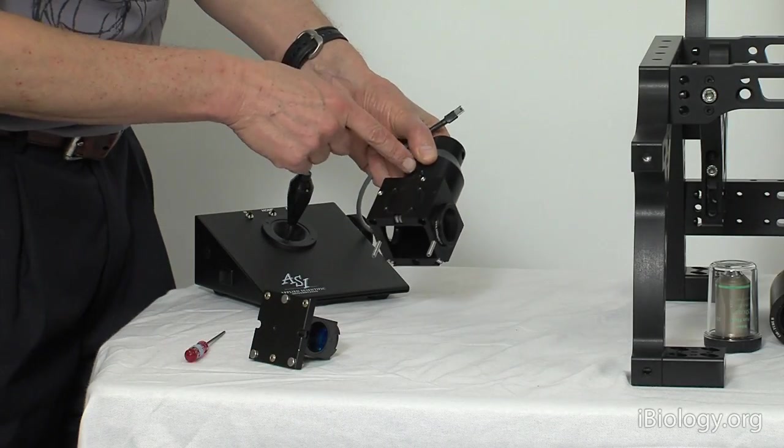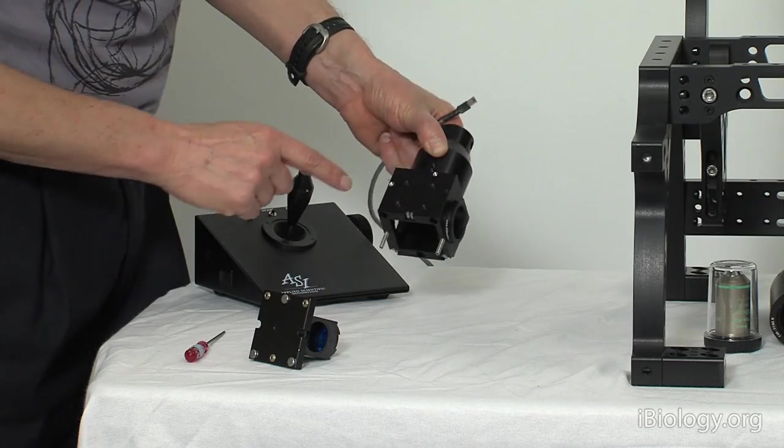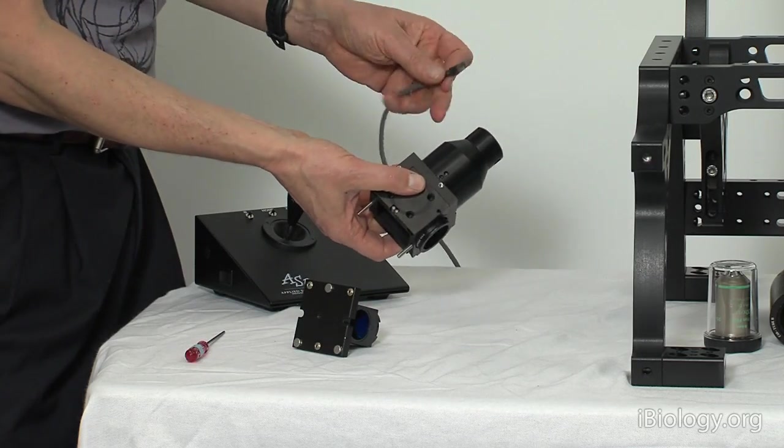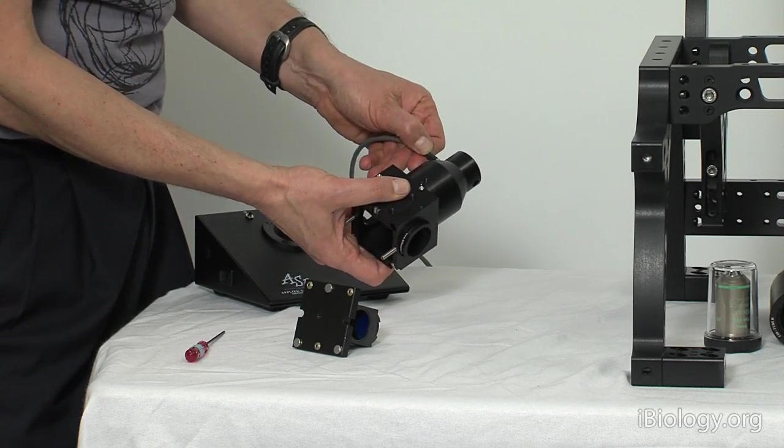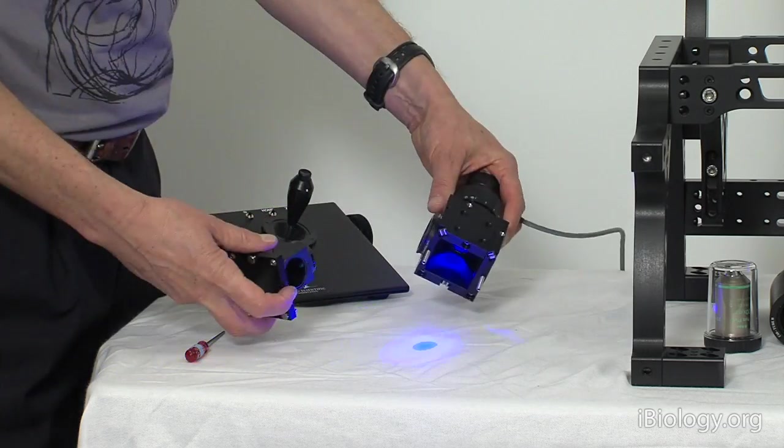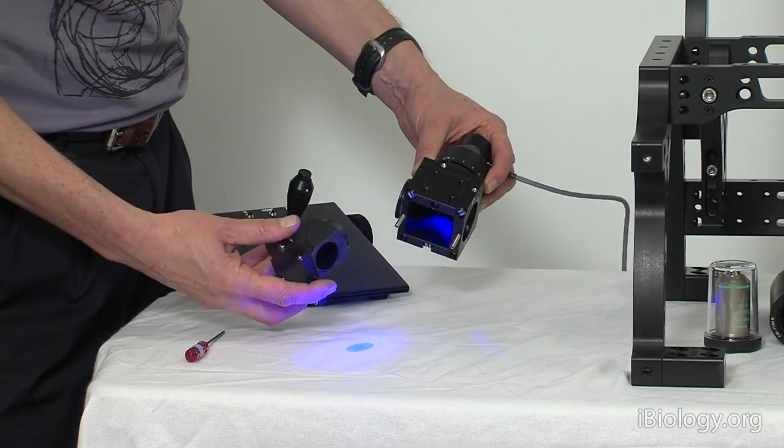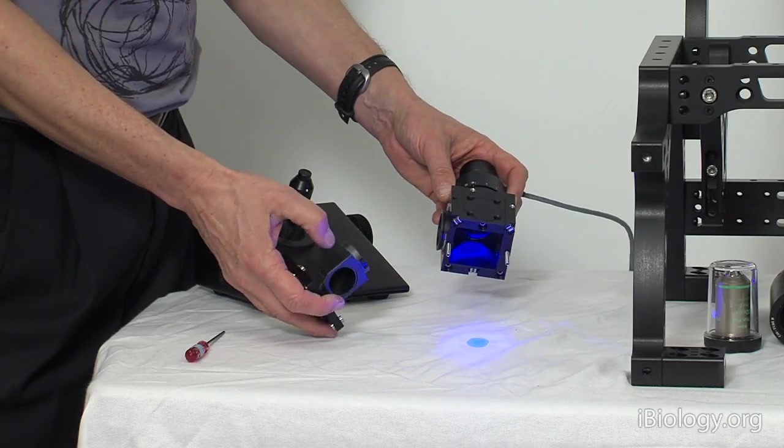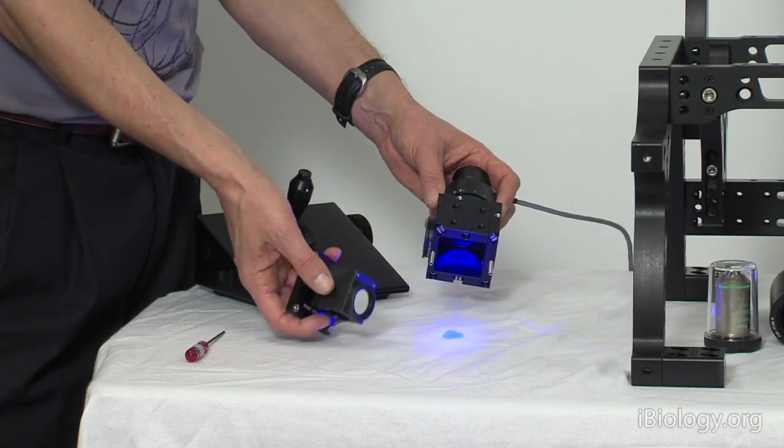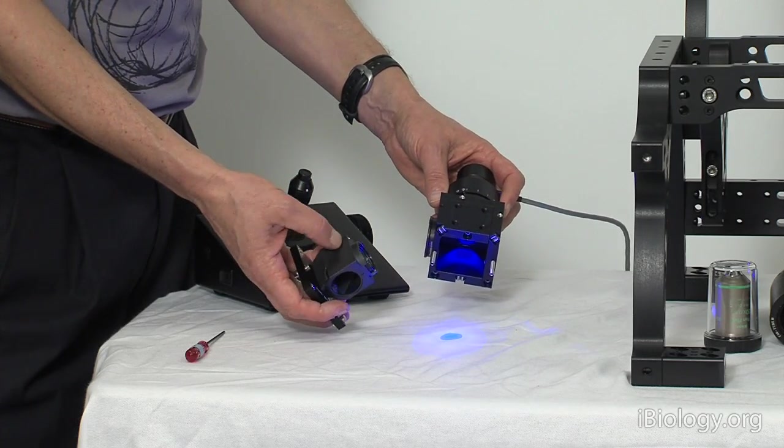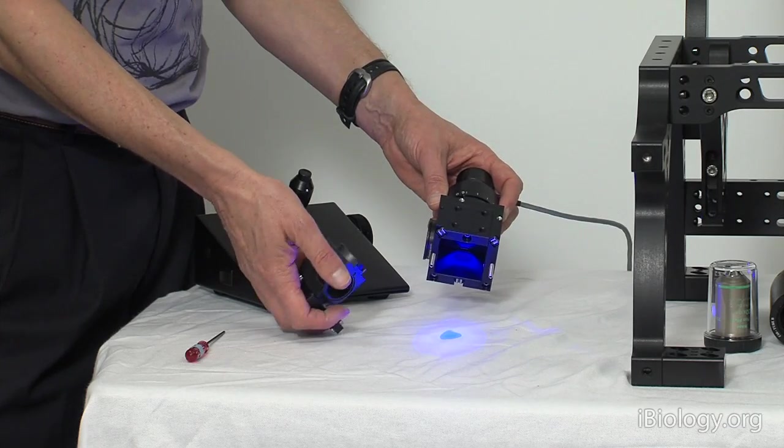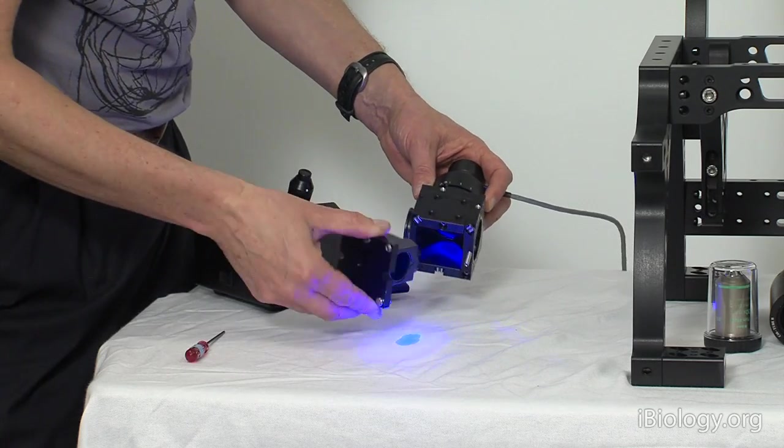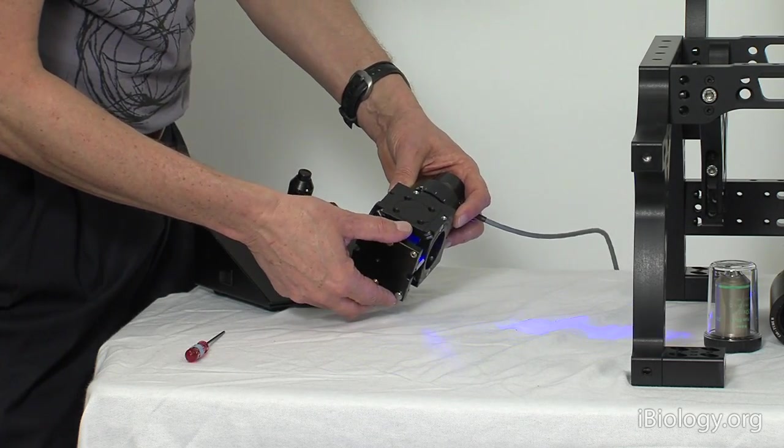So here we have the fluorescent light source, an LED, and then the holder for the fluorescent cube. I'll now light the LED by connecting the USB power source. We have the blue light coming out of the LED, and now we can investigate what happens when we put this fluorescent cube back in. The cube has an excitation filter here, the dichroic mirror here that we expect to reflect the blue light out, and then green fluorescence will pass through this emission filter. When we put the cube in, we see indeed that the blue light is now reflecting this way.